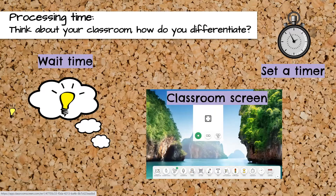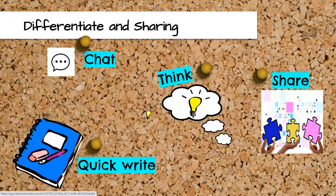When it comes to sharing, we want to consider different learning styles and diverse needs when asking students to share. Maybe you want students to use the chat if they feel more comfortable putting their thoughts in writing. Maybe you want them to think first and then share with a partner who shares out. A quick write is a great tool — students take any piece of paper, whiteboard, or Google Slide to write down what's most important from the question you post. Those are some ways to allow for differentiation in terms of sharing.